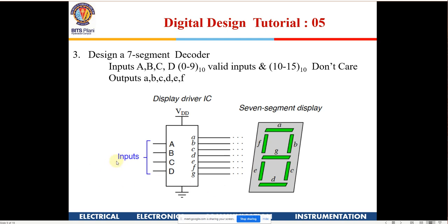Can we solve this with a single K-map, or do we need a K-map for each output? We have to treat each output as an individual function.